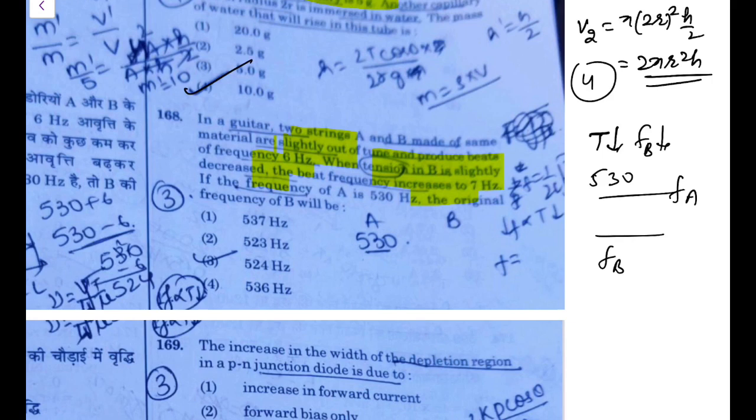If A is 530, then B will be the lower one, that is 530 minus 6, that is 524. You can directly make it out: it is 524 hertz. Option 3 is the answer.